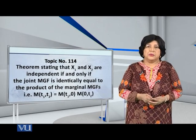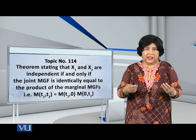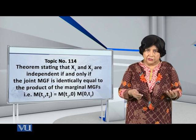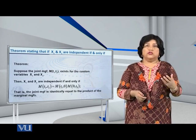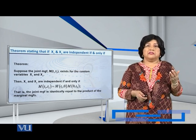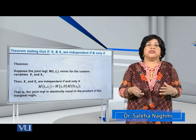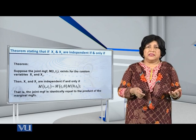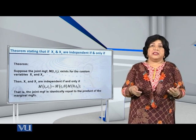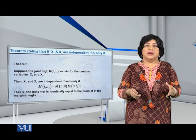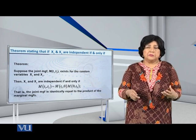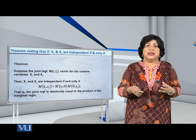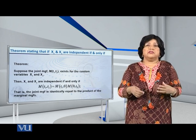Let me present a theorem pertaining to the moment generating function for a joint distribution. Suppose that the joint MGF, M(T1, T2), exists for the random variables X1 and X2. Then X1 and X2 are independent if and only if M(T1, T2) is equal to M(T1, 0) multiplied by M(0, T2). In other words, the joint MGF is identically equal to the product of the marginal MGFs.